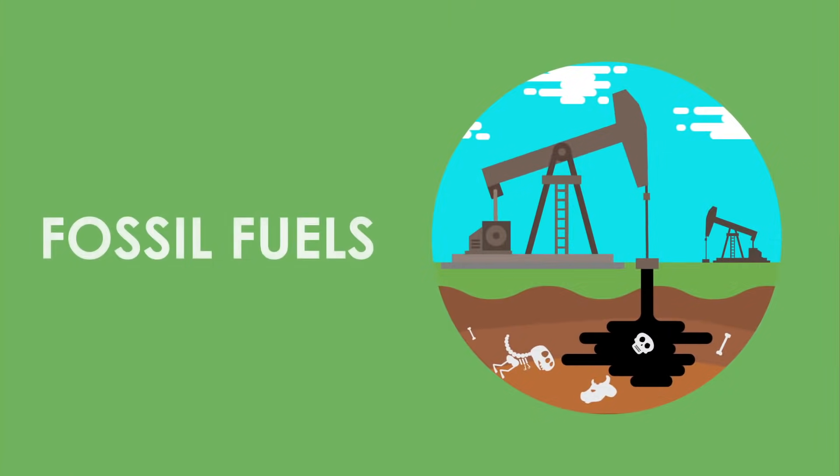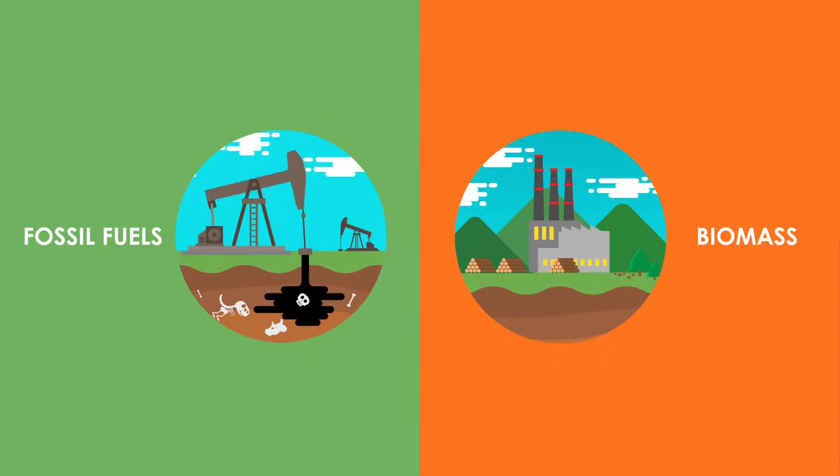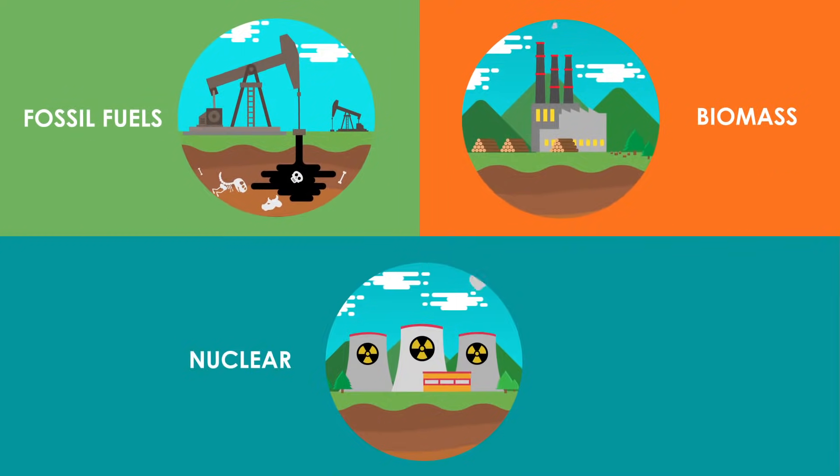Fossil fuels consist of extracted decomposed organisms and plants that existed millions of years ago. Biomass converts plants into biometric material to produce energy. Nuclear energy is released.